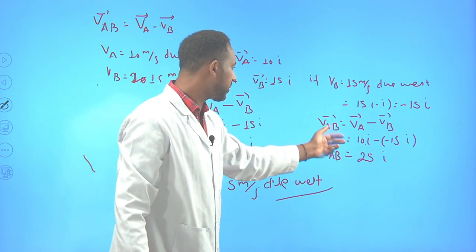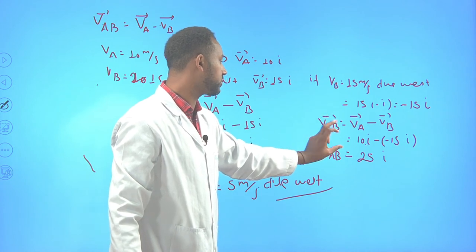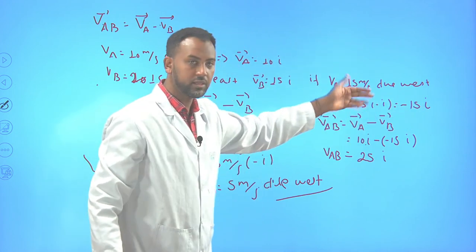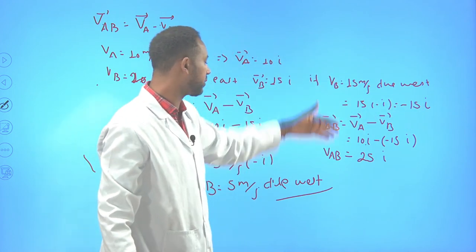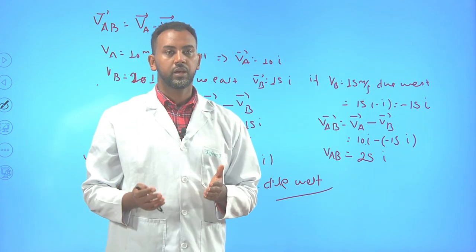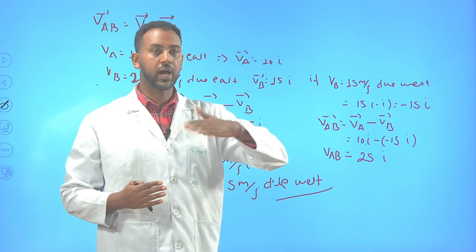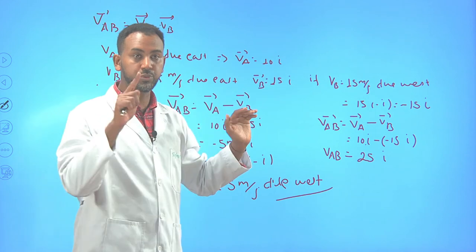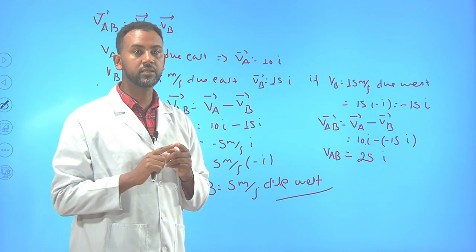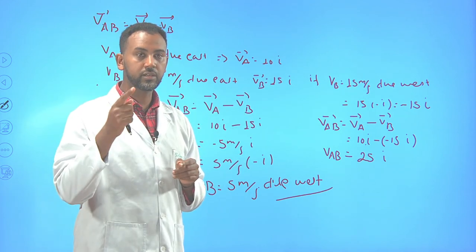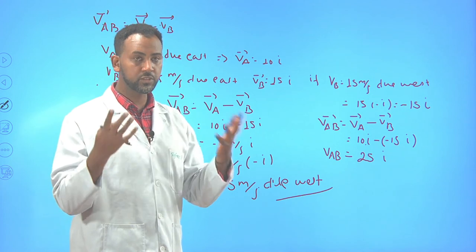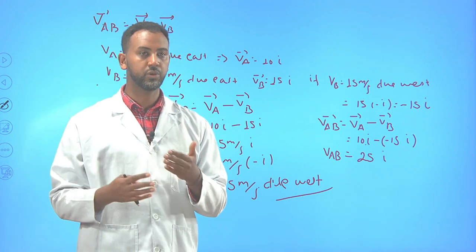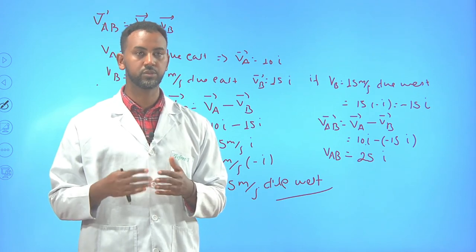The resultant should be √(10² + 15²). This is the way you should approach relative velocity problems. I wish you will try to solve lots of problems. This is all I've got for today.